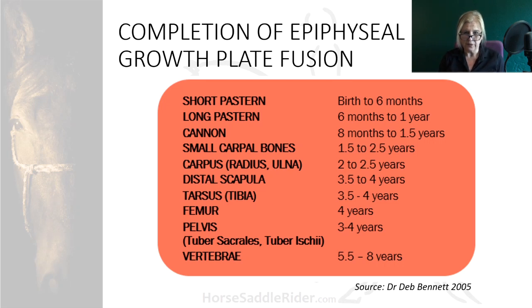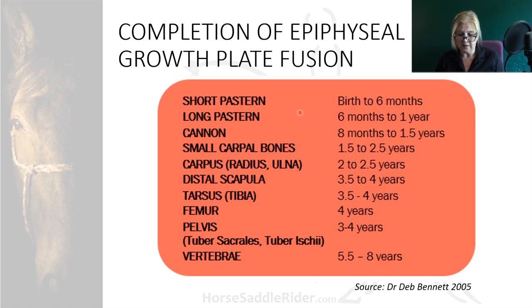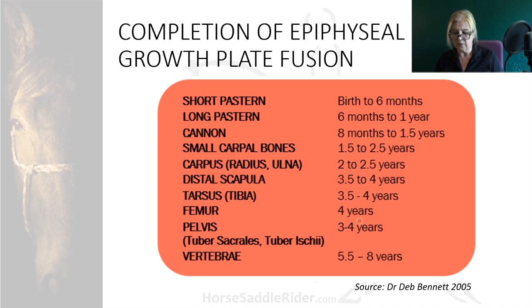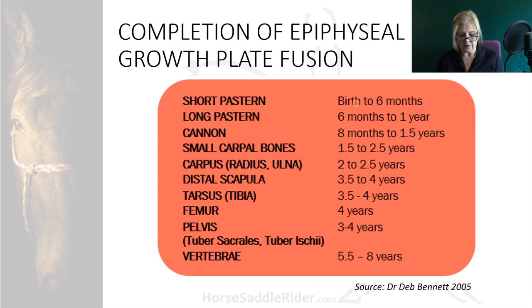An important characteristic of the skeleton in relation to equitation is the rate of closure of the epiphyseal growth plates. Immature skeletons are highly vulnerable and you can see from this chart that different regions of the body are skeletally mature at varying times. It is clear that horses below three to four years of age are not suited to overloading of their joints with the unnatural activity of equitation. They evolved to sprint for approximately a quarter of a mile to escape predation without a rider on their backs.